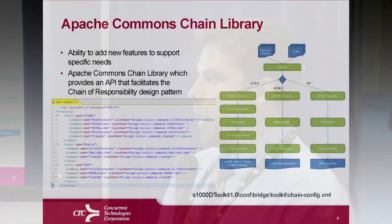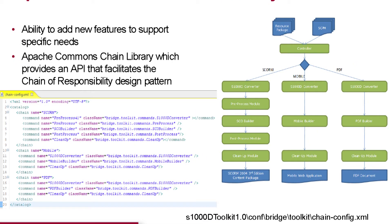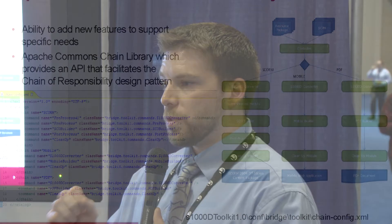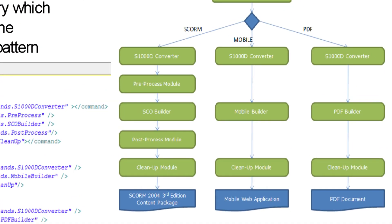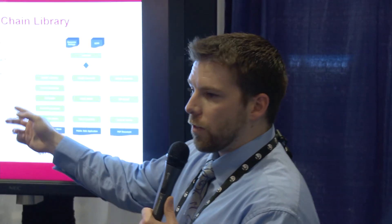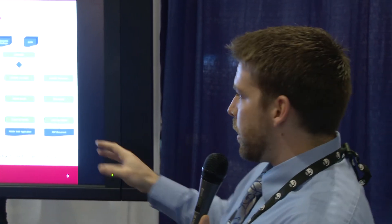We took advantage of the Apache Commons Chain library, which is built on the chain of responsibility design pattern. This enables our plugin architecture. If we want to add something new, it's not a strenuous process — we write one single class and modify an XML file. As you can see in the SCORM output process, if we wanted to add or remove a module, it's as simple as writing that class and updating the XML. We can add multiple modules or new branches — it's very simply configured because of this library.